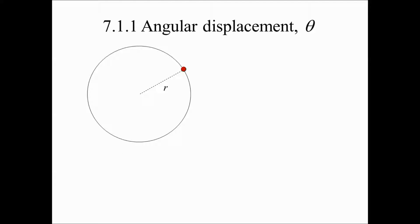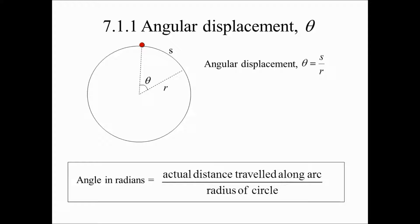Angular displacement theta. Consider an object going round in a circle. Let's suppose that the angle it displaces is theta. Angular displacement theta is defined as the ratio of the arc length to that of the radius. So, angle in radians will be equal to the actual distance traveled along the arc divided by the radius of the circle.